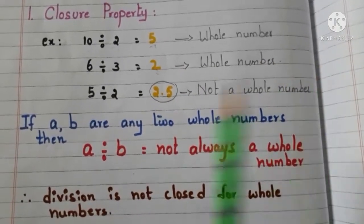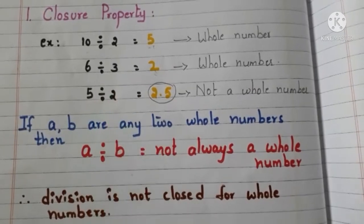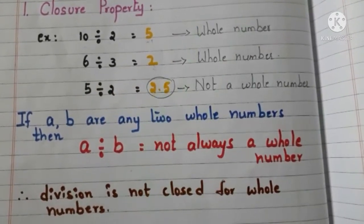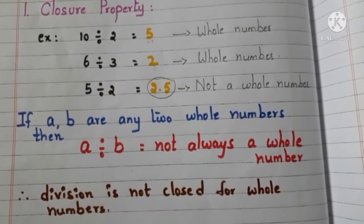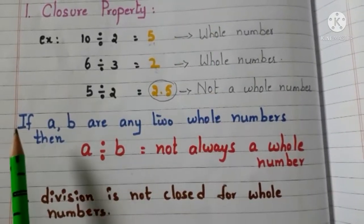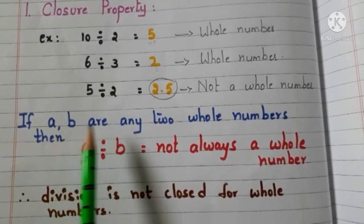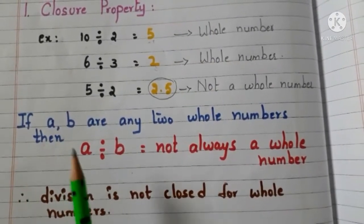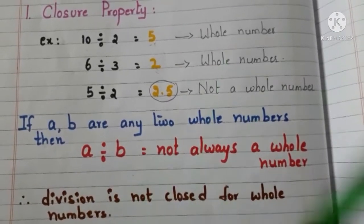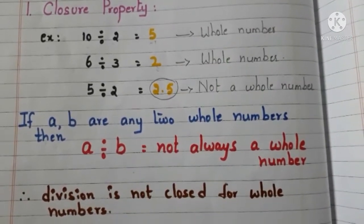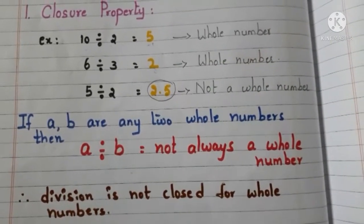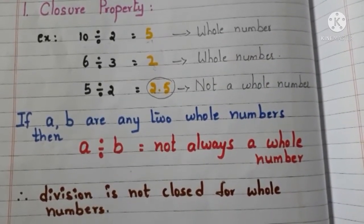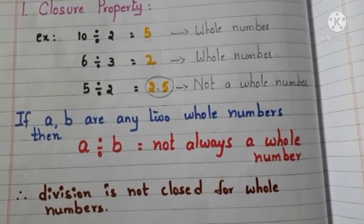When we divide a whole number with another whole number, the quotient is not always a whole number. If a and b are any 2 whole numbers, then a divided by b is not always a whole number. Therefore we can conclude that division is not closed for whole numbers.